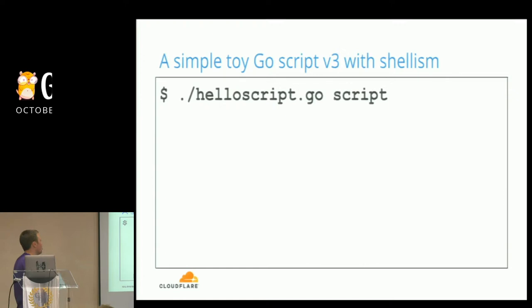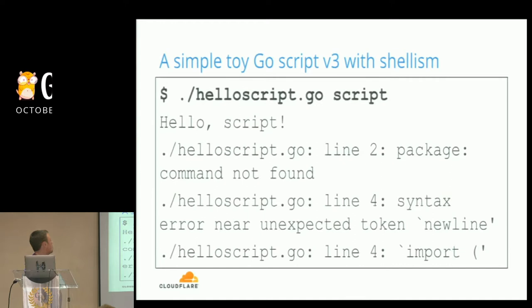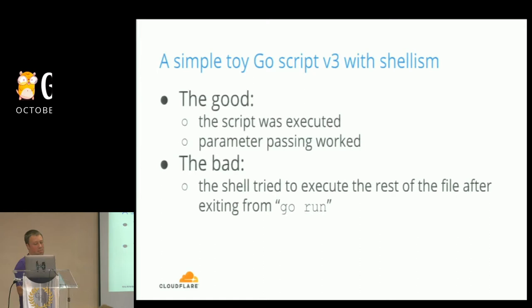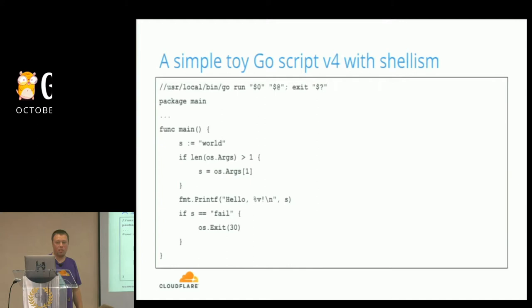Let's try to execute it now, also passing one parameter to test argument parsing. You see the script did execute and the parameter parsing worked. But the bad thing is the shell, after executing the first line, tried to execute the rest of the Go file line by line — treating source code as shell commands — which is not good.